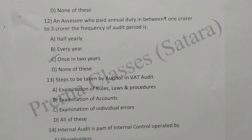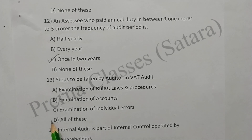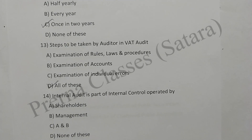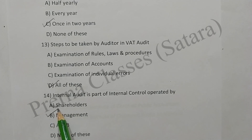Question 13: Steps to be taken by auditor in a tax audit — examination of rules, laws and procedures; examination of accounts; examination of errors — and all of these. Option D is correct. Question 14: Internal audit is part of internal control operated by management. Option B is correct.